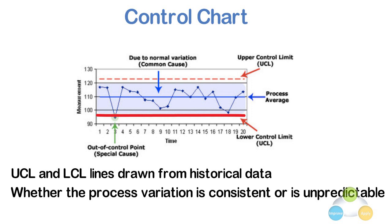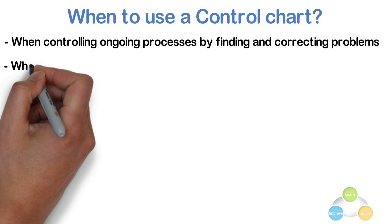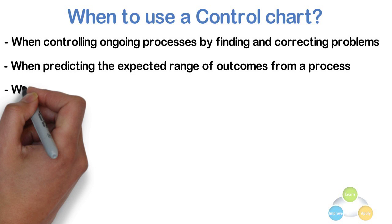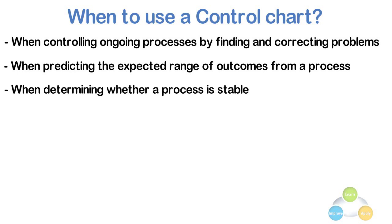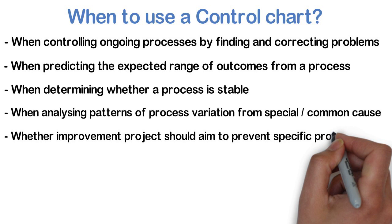When to use a control chart: When controlling ongoing processes by finding and correcting problems as they occur. When predicting the expected range of outcomes from a process. When determining whether the process is stable, i.e. in statistical control or not. When analyzing patterns of process variation from special causes or common causes. When determining whether your quality improvement project should aim to prevent specific problems or to make fundamental changes to the process.